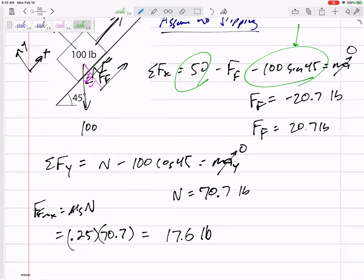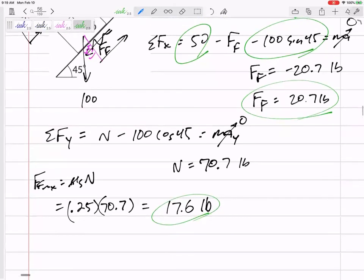All right, so what happened? I need a force of 20.7 in order for my assumption to be correct. The maximum though can only get up to 17.6, so it is slipping.